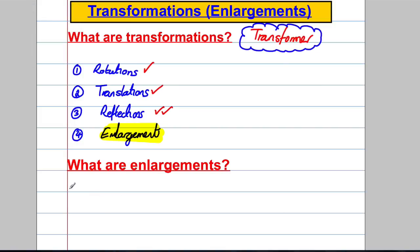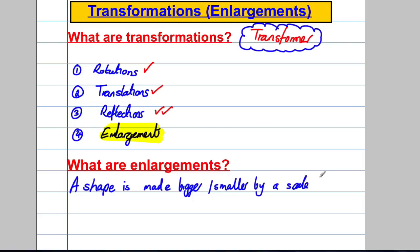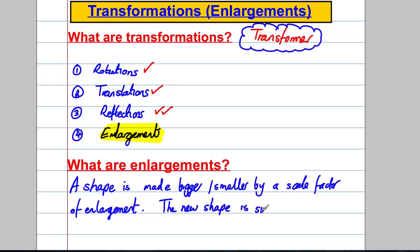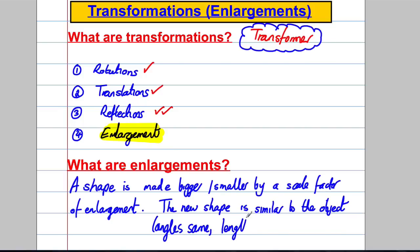An enlargement is when a shape is made bigger or smaller by a scale factor. The new shape is similar to the original object shape — meaning the angles are the same and the lengths are in a ratio or scale factor.